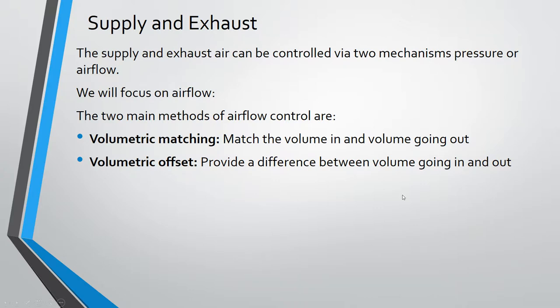Now, volumetric offset, this is done more in a pressure scenario. So you provide a difference between volume going in and the volume going out. Typically, the volume going in is more than the volume going out, which air has volume. It has mass, which then means that air going into that space starts to pressurize that space. And that's how you create a positive pressure environment. You would want to use a positive pressure environment in spaces where you don't want things to come in. Like operating rooms are typically positively pressured so you don't get contaminants coming in.